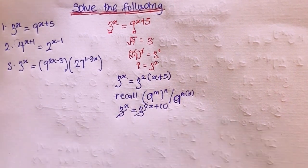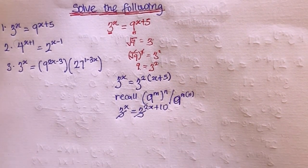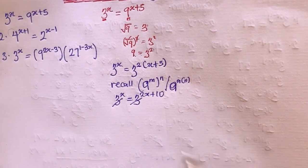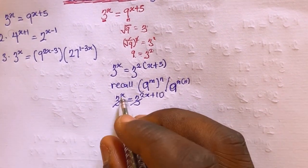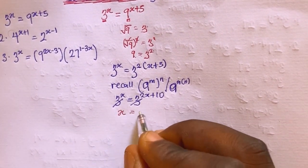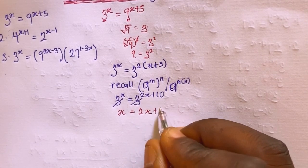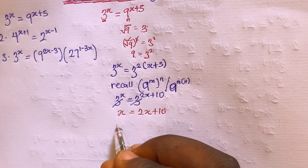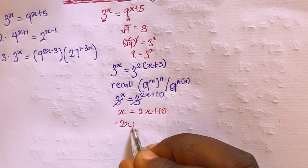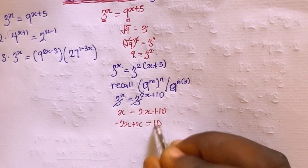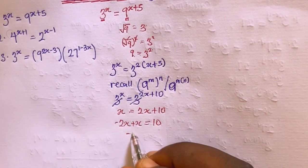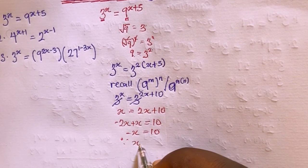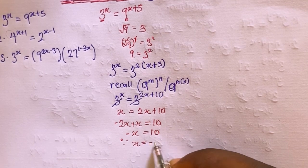Since both sides have the same base, we equate the exponents: x equals 2x plus 10. Bringing like terms together: minus 2x plus x equals 10, which gives minus x equals 10, therefore x equals minus 10.